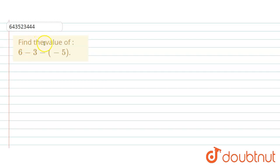Hello everyone, the question says that find the value of 6 minus 3 minus minus 5. So here the number is given as 6 minus 3 minus minus 5.